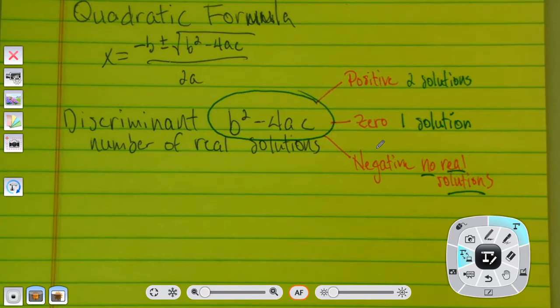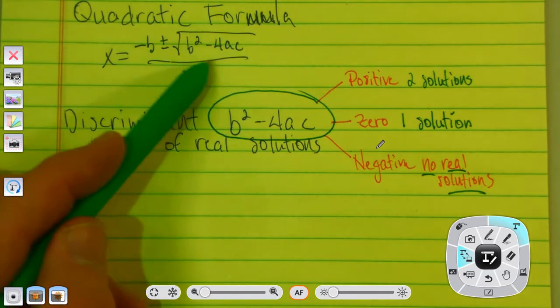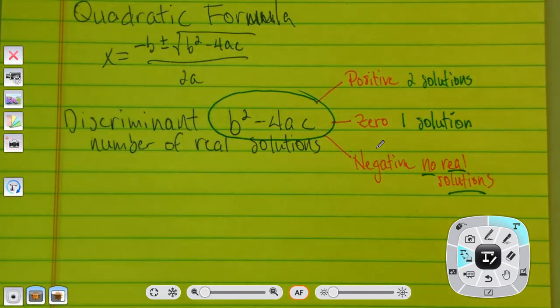So, that part of the quadratic formula is going to tell us a lot about what our answer is going to look like. So, what we're going to do each time, really, to make life a little easier, is we'll find the discriminant first, and we'll be able to take that answer and just put it underneath the radical to find the solutions using the quadratic formula.